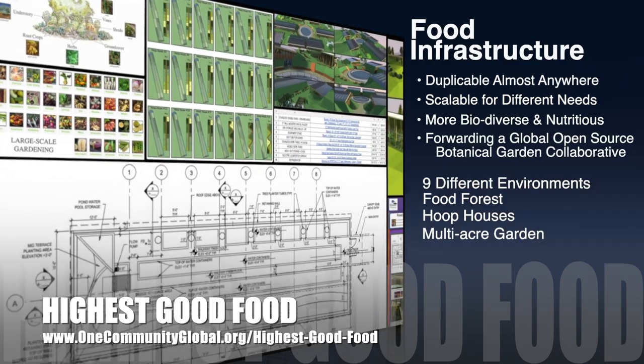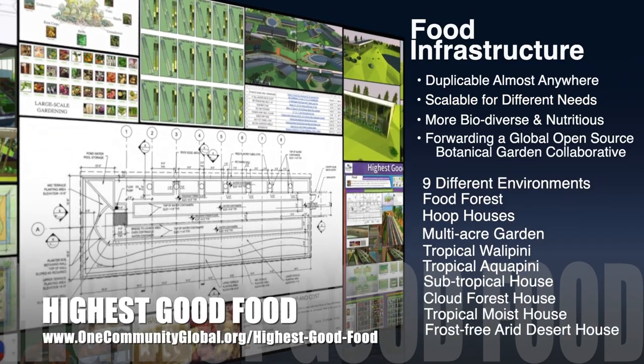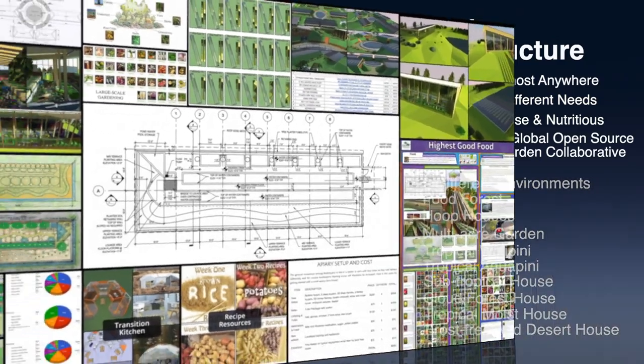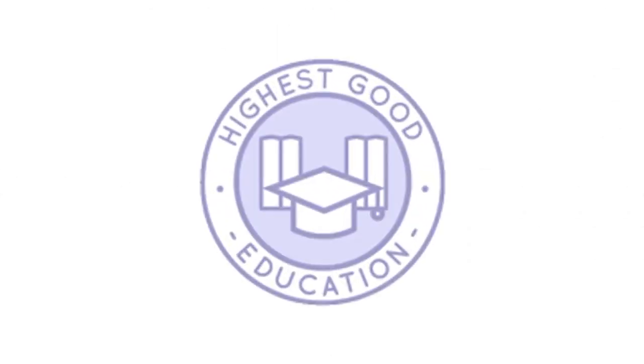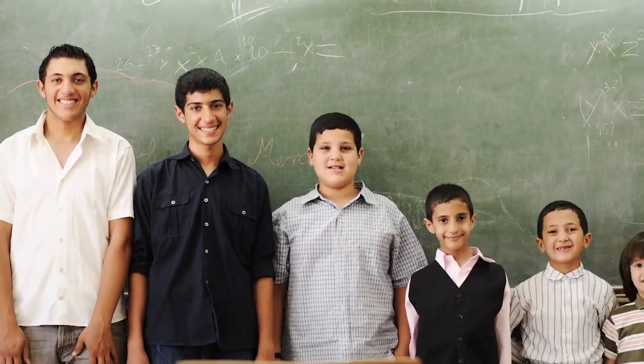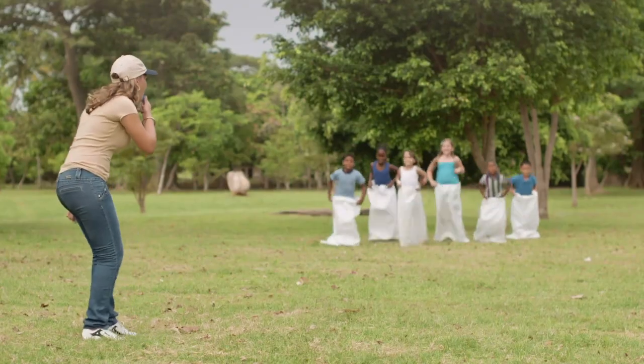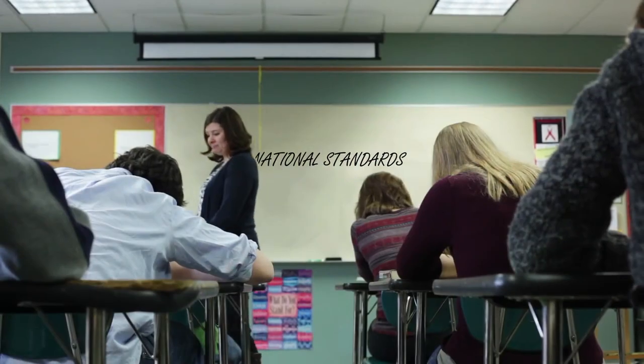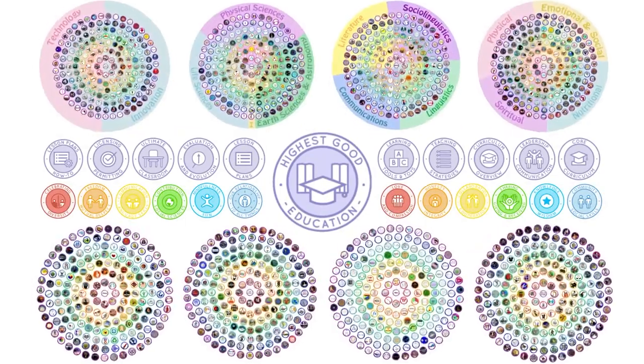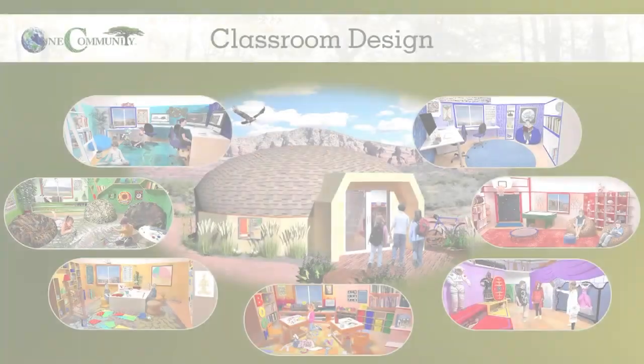One Community's approach to highest good food is duplicable almost anywhere, scalable for different needs, more biodiverse and nutritious, part of forwarding a global open source botanical garden collaborative, and includes nine different free-shared and duplicable growing environments. The next component is highest good education — this component is complete and pretty much ready to launch once we're on the property. One Community's approach to highest good education is designed for all age groups, adaptable to any schooling environment, inspiring and fun, and includes national standards, all subjects, lesson plans, teaching strategies, learning strategies and tools, classroom design, and more.